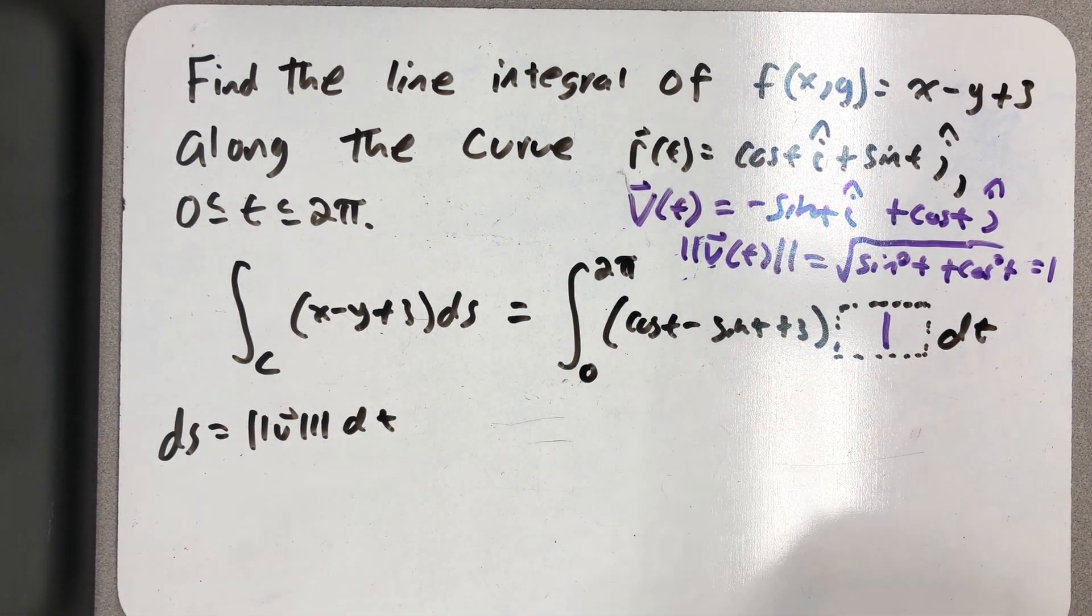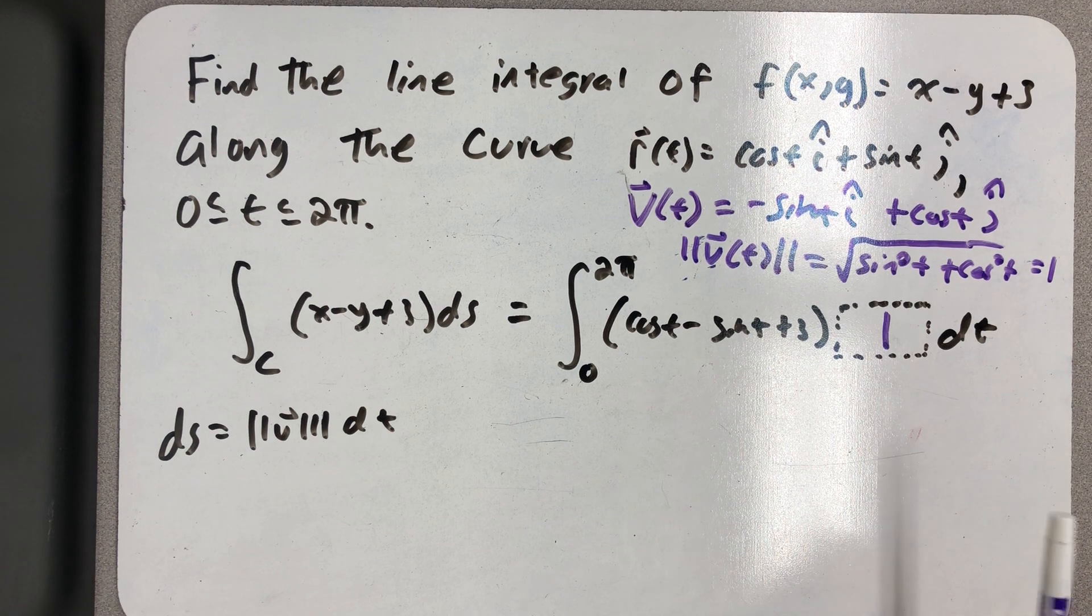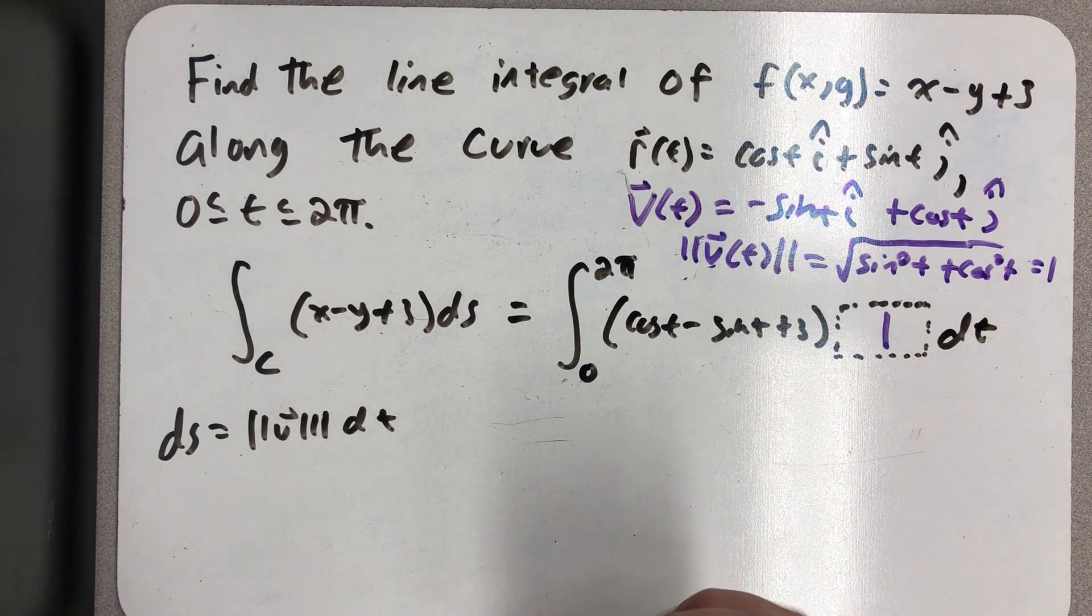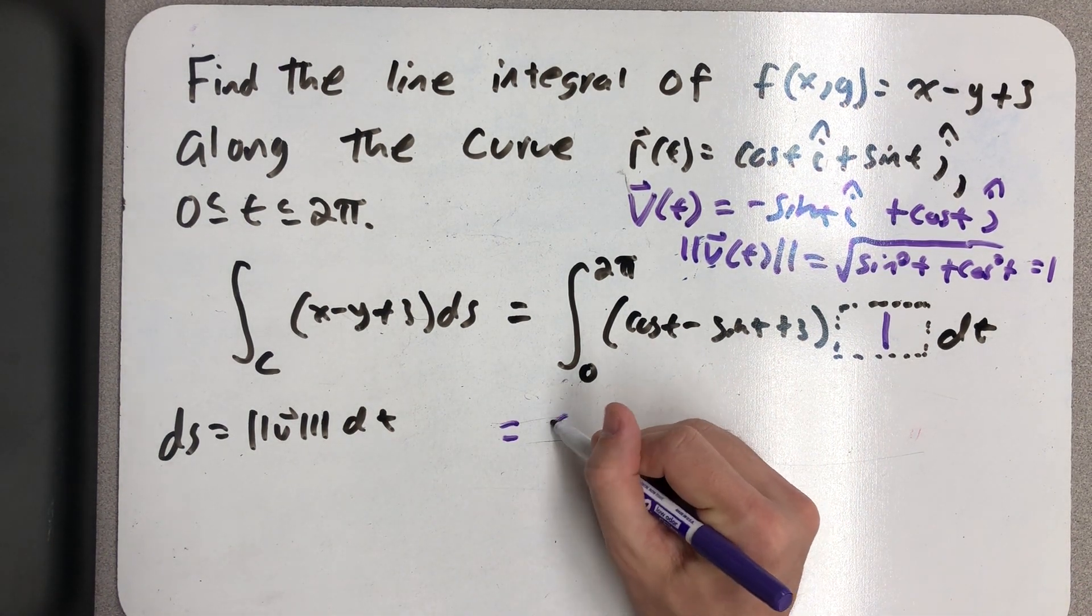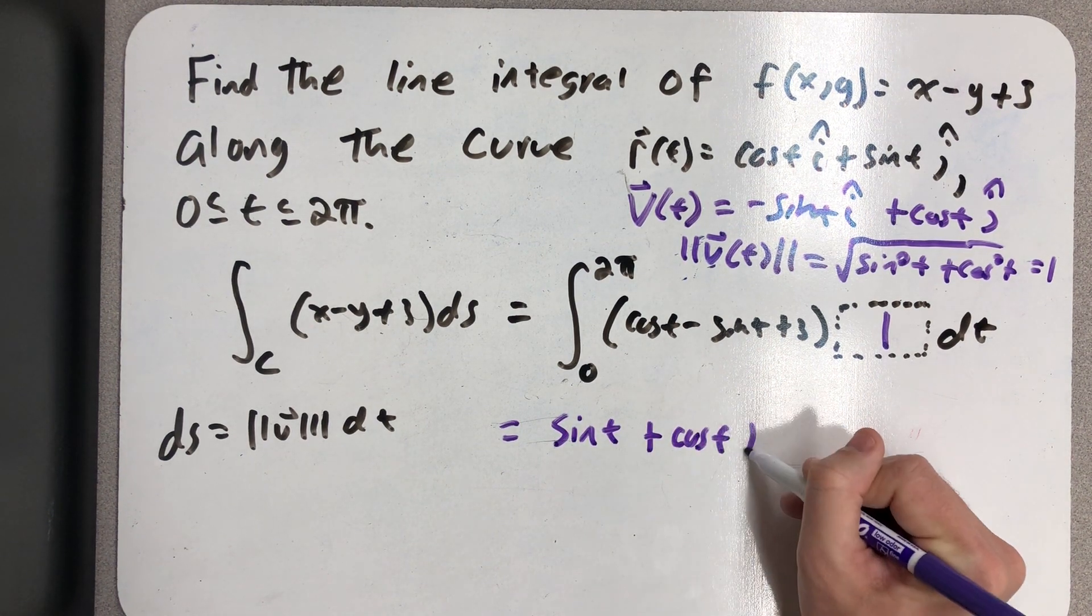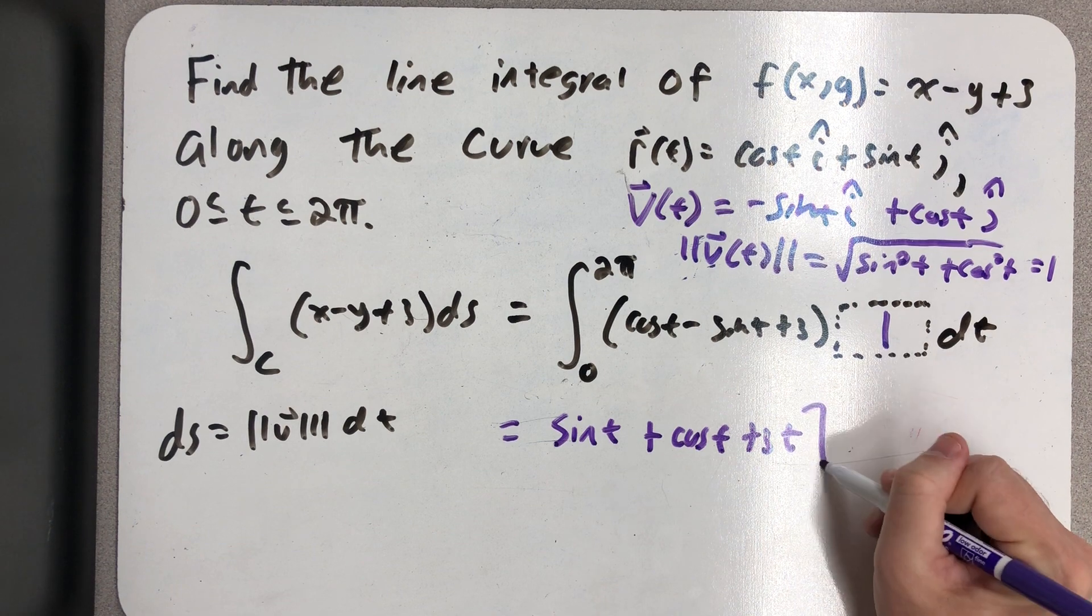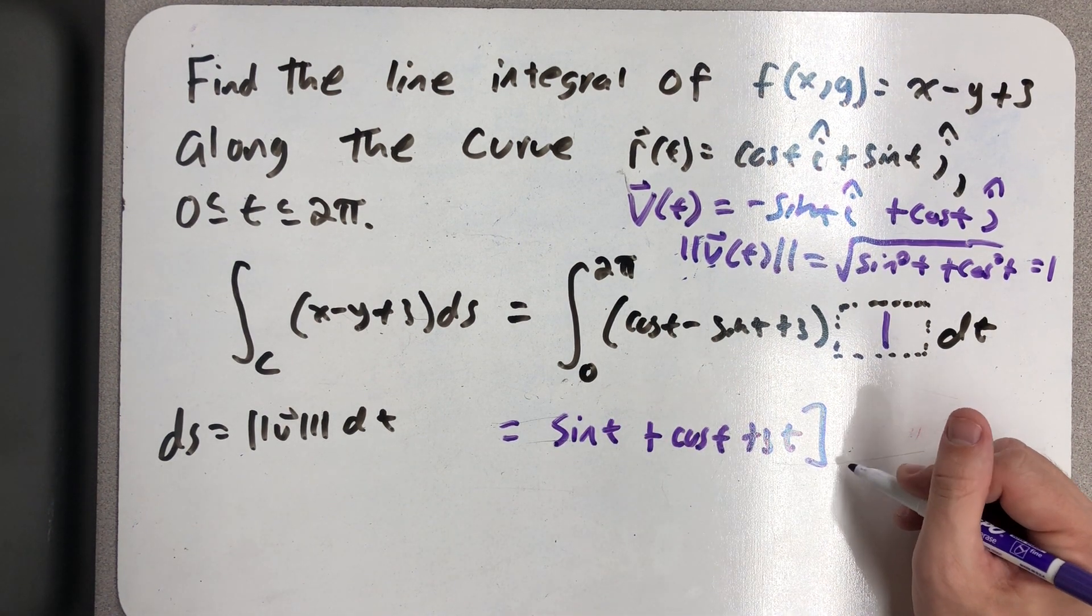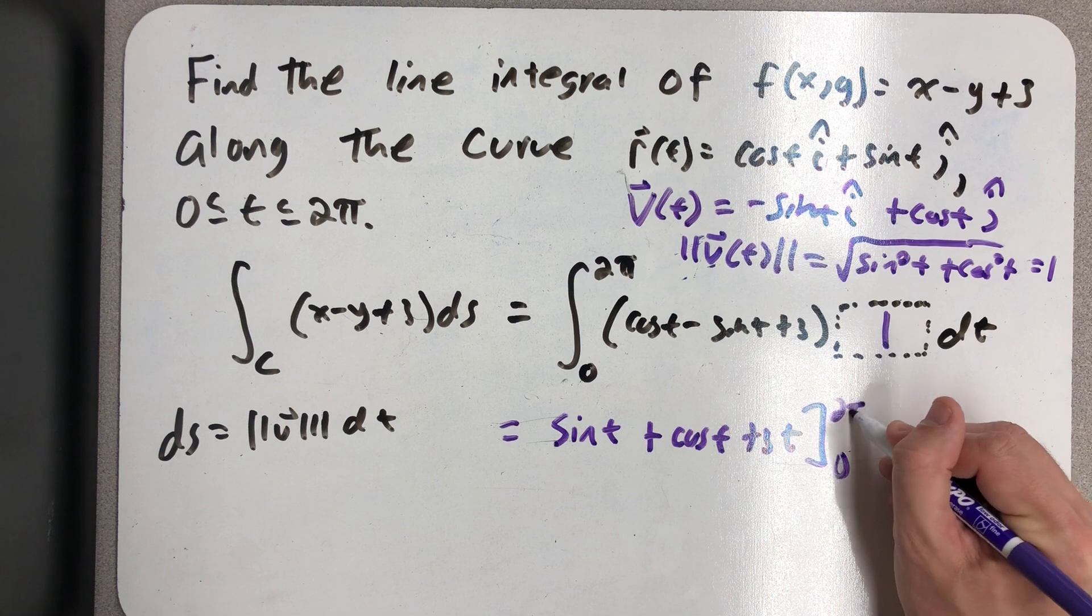All right, but now we do have a pretty straightforward integration problem. We're just finding an antiderivative for each term and evaluating from 0 to 2π.